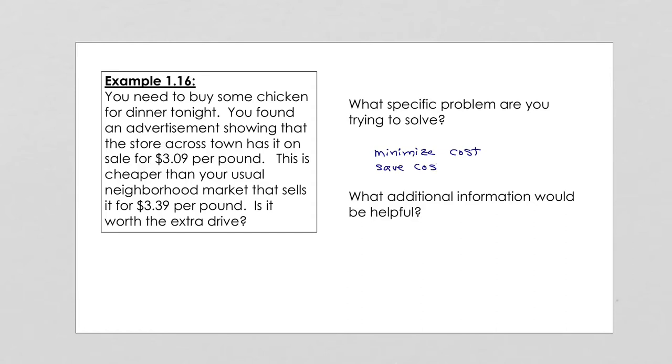Now what additional information would be helpful? We need to know things like how far it is to the market. How far are the markets? And what else do we need to know? We need to know how much it would cost to make the trip. And involved in that is going to be the gas mileage that you get in the car as well as how much a gallon of gas is. We need to know our miles per gallon in our car, the miles, and how much chicken we want. All of these things are important in solving this problem.